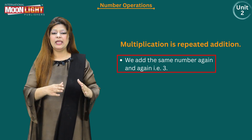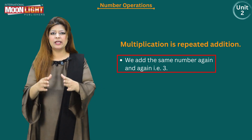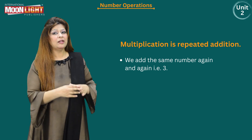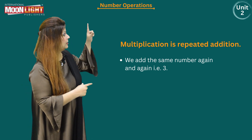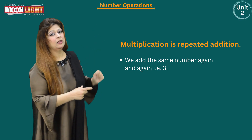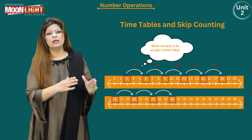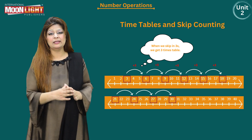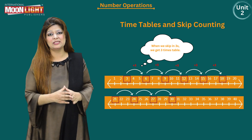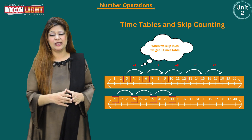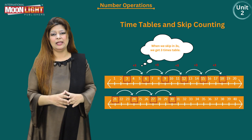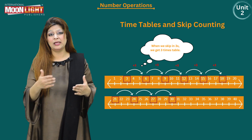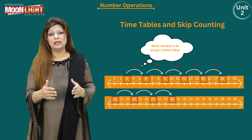For example, if we are developing the table of the number three, we are going to add the number three again and again. If I have three and I add three again, the answer will be six. In six, I add three again, that will be nine. In the same way, by adding three repeatedly to each answer, I am developing the table.